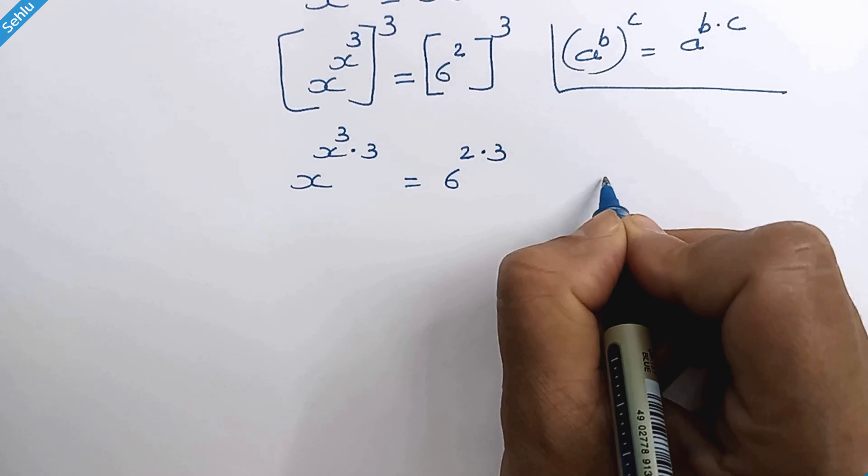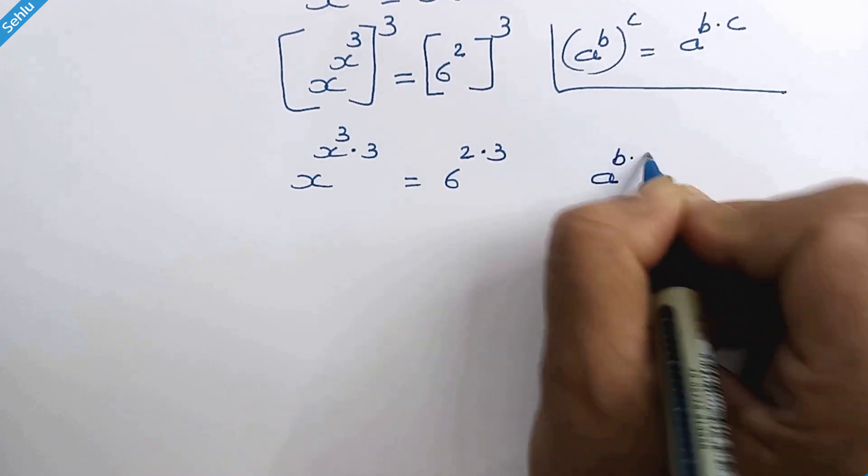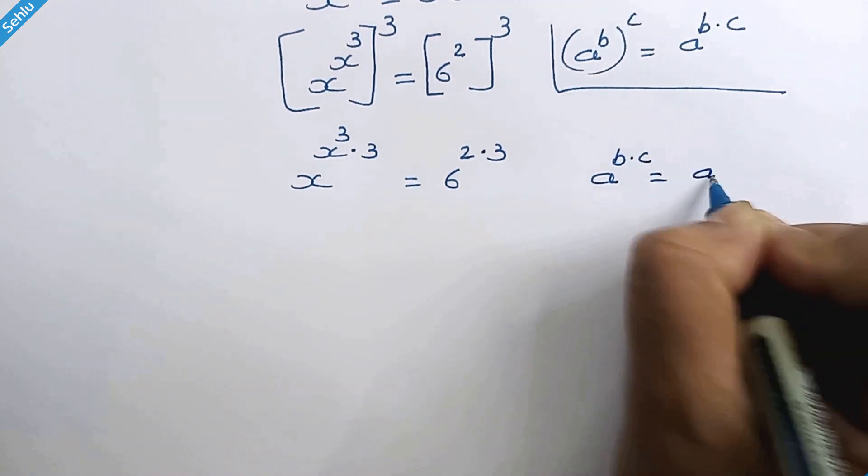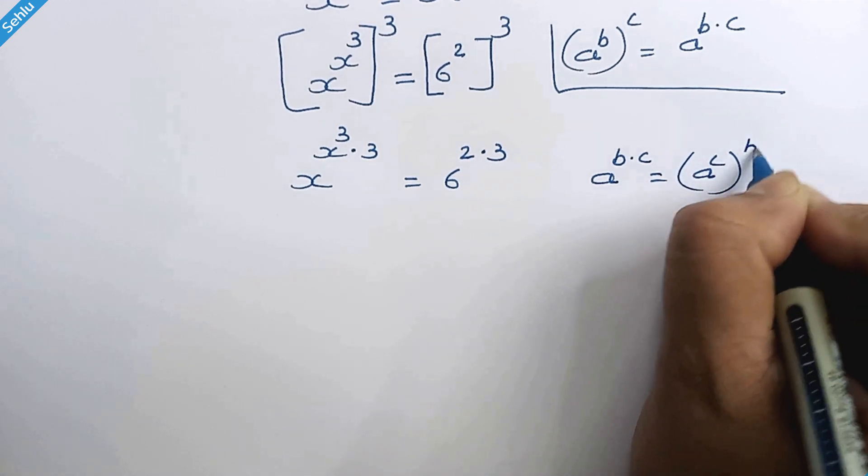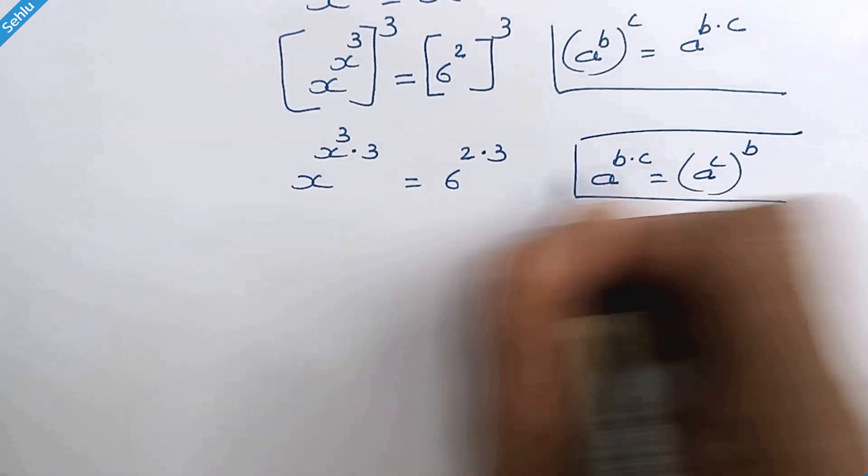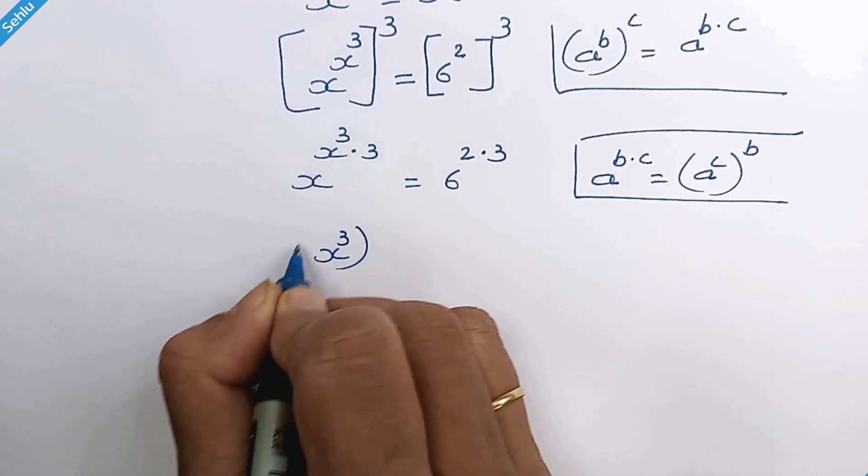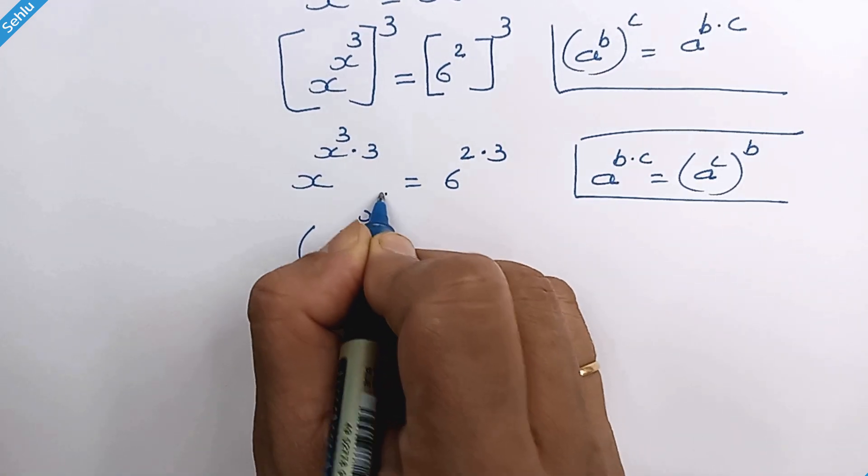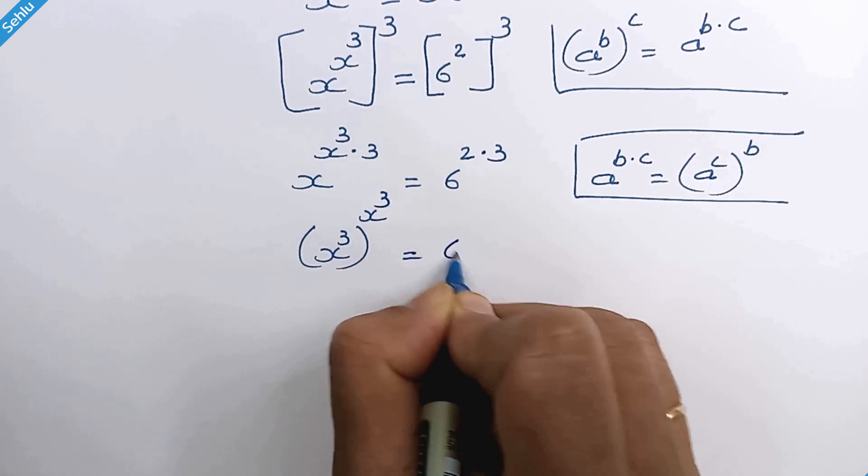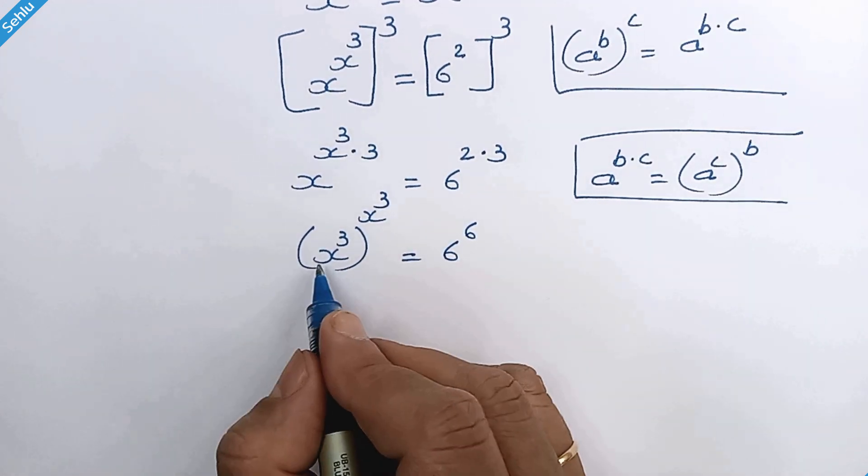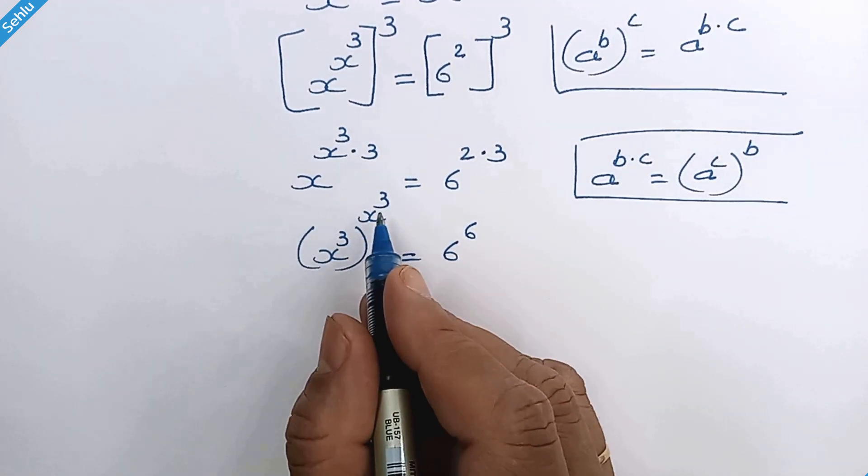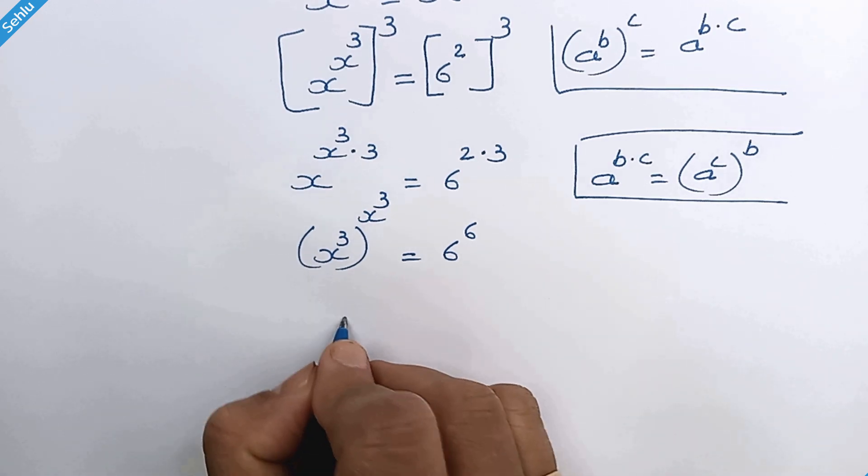Now, if we have a raised to b times c, then it can be a raised to c, whole raised to b. So in this manner, we can write this part as x cube, whole raised to x cube, and here we have 6 raised to 6. The base and the exponent are the same on both sides, so we can equate x cube equals 6.